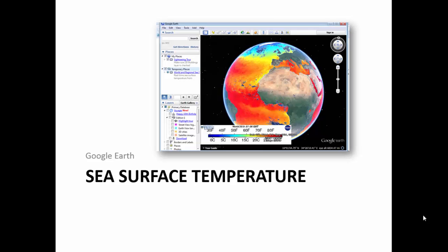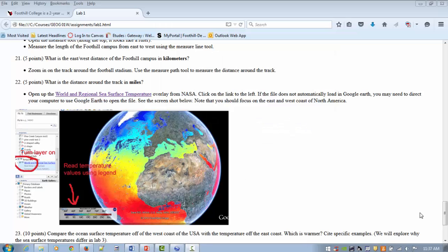Next, let's move over to the sea surface temperature question in the lab. To load the sea surface temperature, let's go to the lab and click on the link. Here we are in lab one. Question 23 asks you to compare the ocean surface temperature off the east coast of the U.S. with the west coast of the U.S.